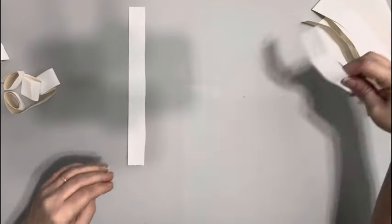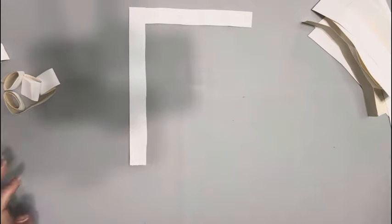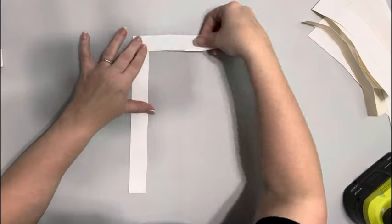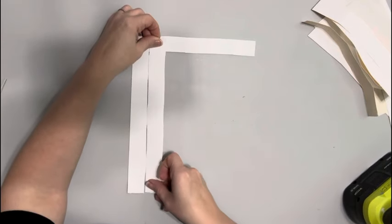And then take the longer piece and have it going downward. The other one will be glued going in the opposite direction, but those two will meet at the ends of each.